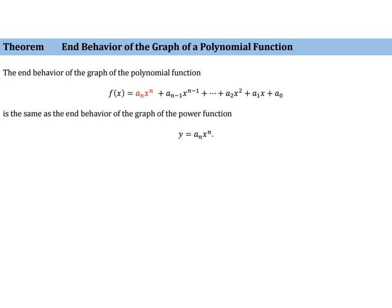Whenever we are thinking about graphing a polynomial function, one of the first things we will do is look at the end behavior. The end behavior of a polynomial function is based upon the leading term. We'll take the leading term and it will have the same end behavior as a power function. These other terms really determine what happens in the middle of the graph. The leading term tells us a lot about what happens at the end.